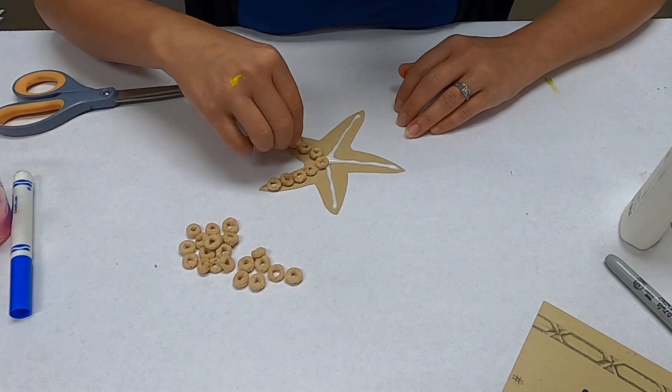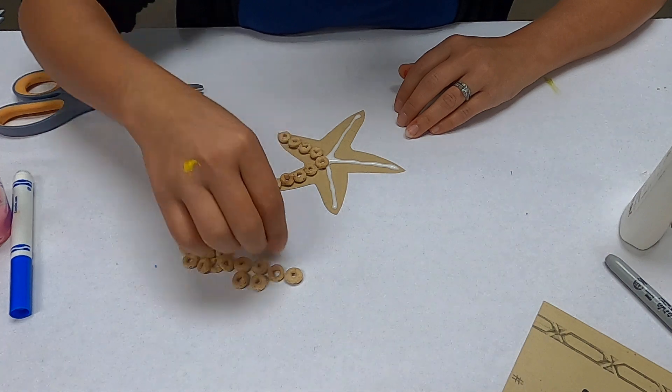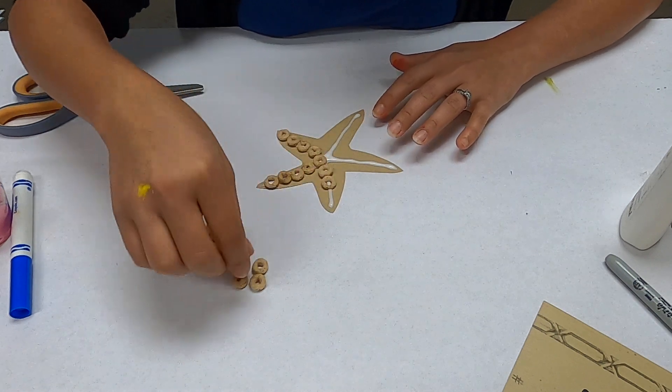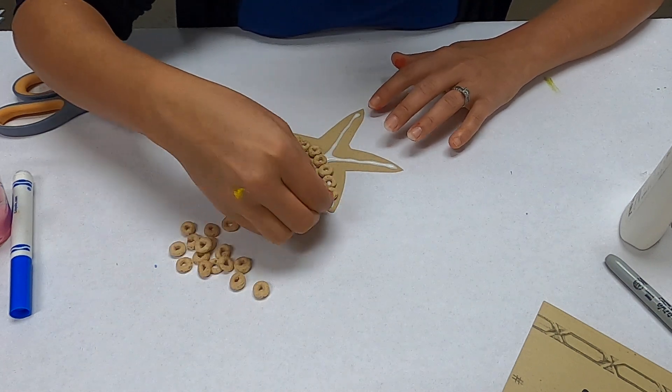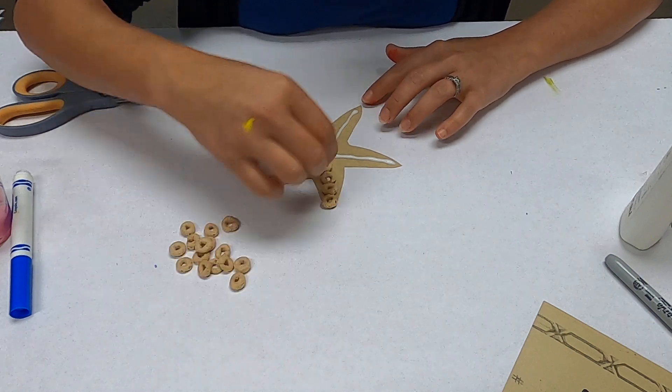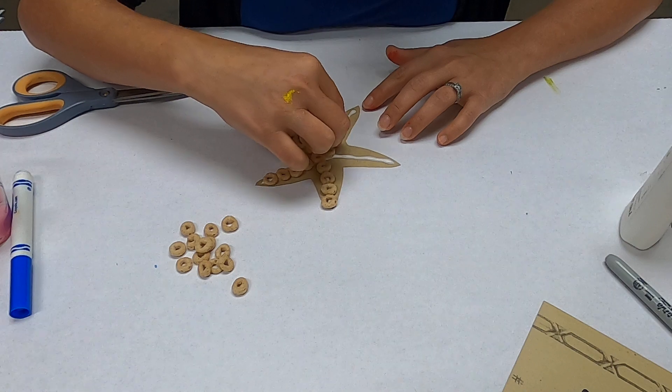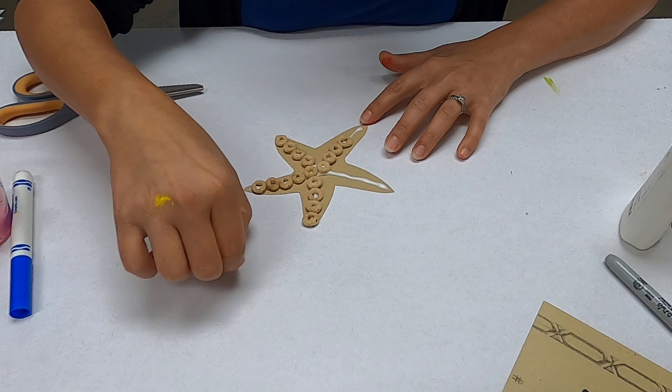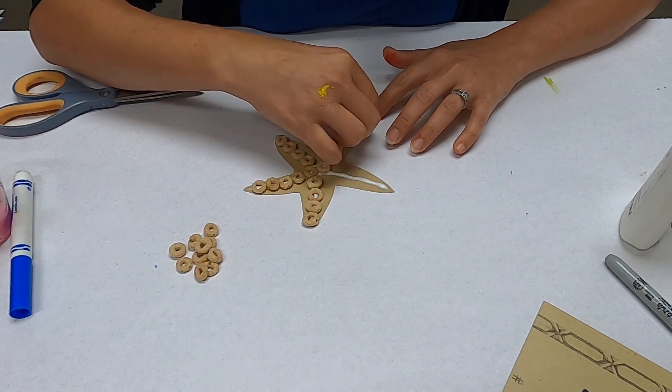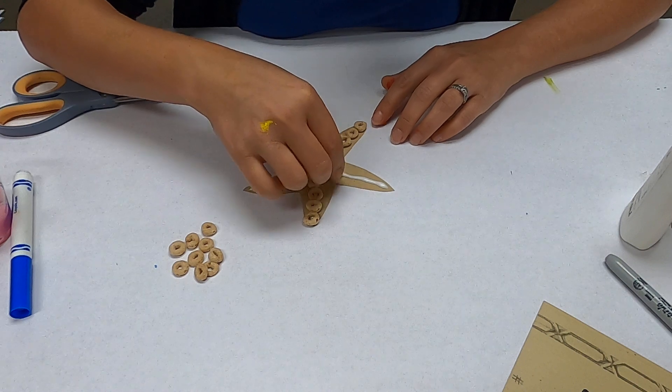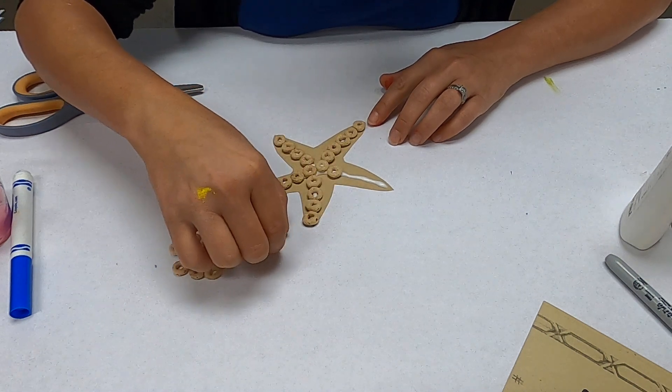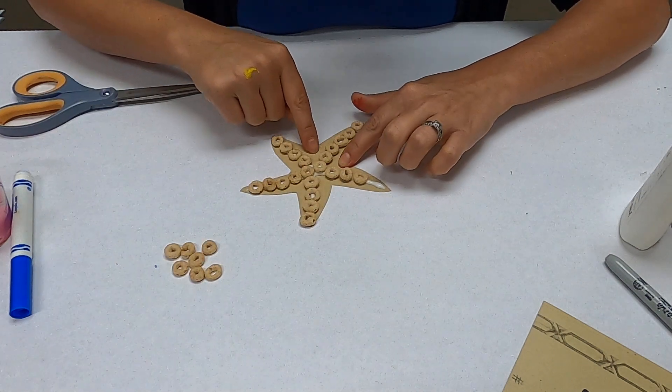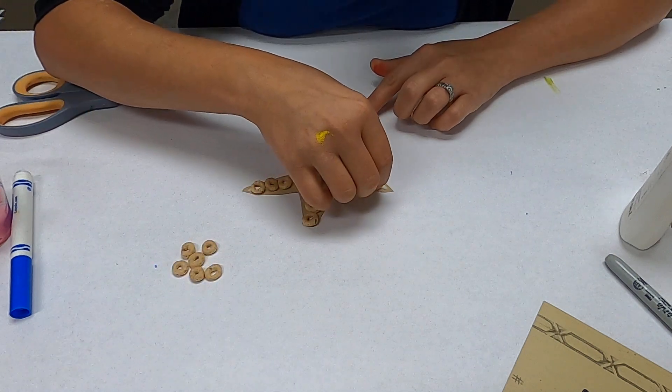You might need a little bit wider of a glue line. If you don't have Cheerios on hand, you can use Froot Loops or Cocoa Puffs, any kind of little cereal that you might have. This is a fun little activity because you can also snack along the way. Keep going until you've got your cereal all the way down. These are kind of like the little suction cups on the bottom of the starfish.